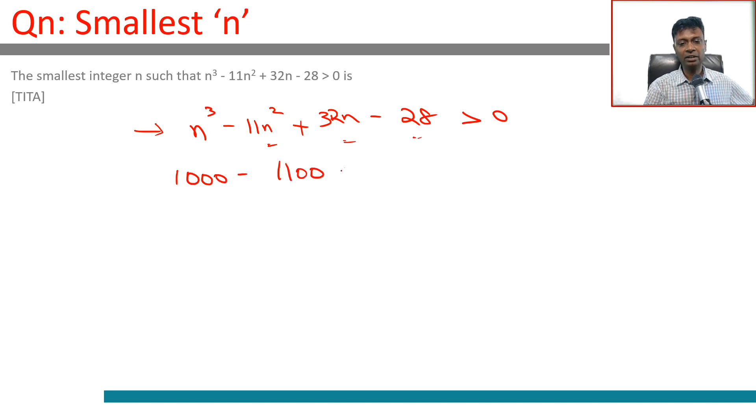Minus 1100 plus 320 minus 28. So 1000 - 1100 is -100 plus 320 minus 28. This works. Now maybe 9 will work, maybe 8 will work. I would like to skip to 8 and then come back and check 9.